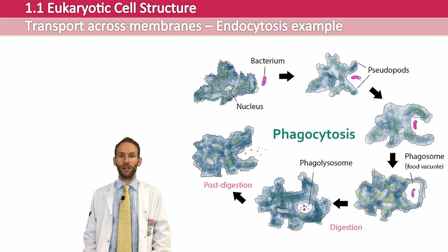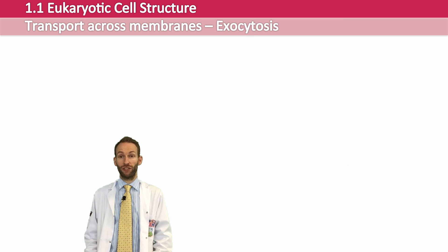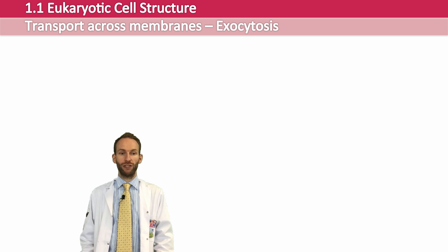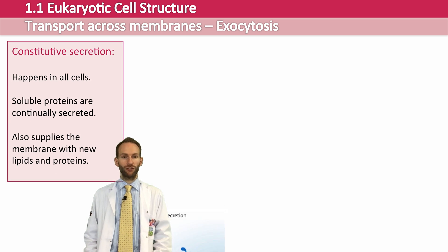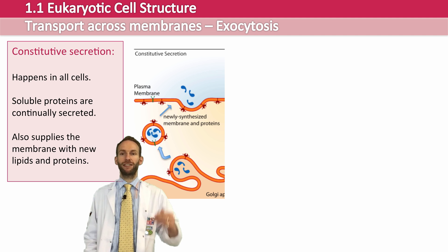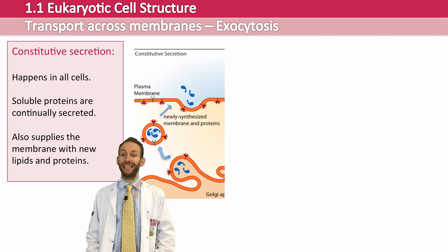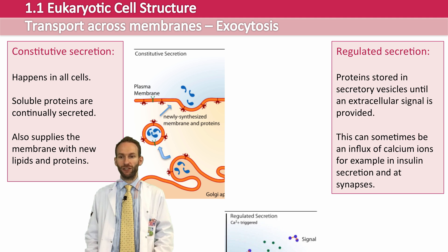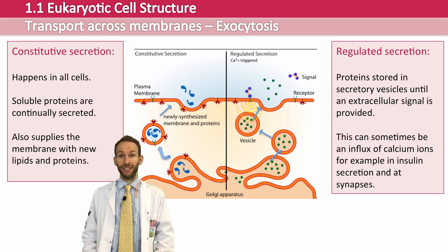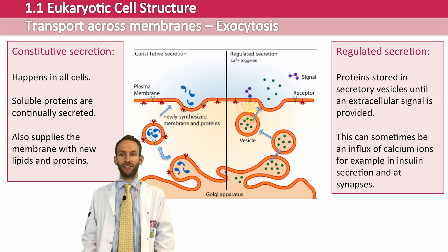In exocytosis, proteins made by the ribosomes and transported to the Golgi for processing can actually be secreted from the cell. They are moved around in vesicles controlled by microtubules. You can have constitutive secretion, which happens in all cells, where soluble proteins are continually secreted, and it can also supply the membrane with new lipids and proteins. Or you can have regulated secretion, where proteins get stored in vesicles until an extracellular signal is provided, and then they are fused with the membrane to release these proteins out of the cell. The signal for regulated secretion can quite often be calcium ions — for example, in insulin secretion and at the synapses of neurons.